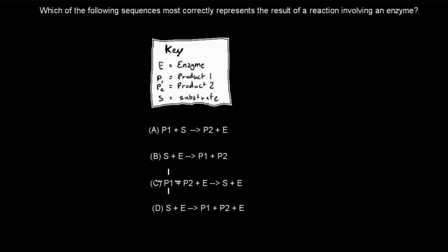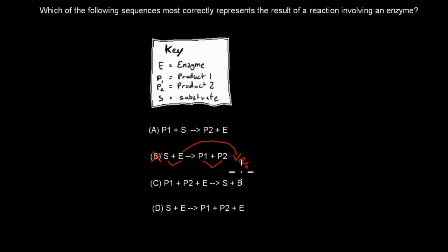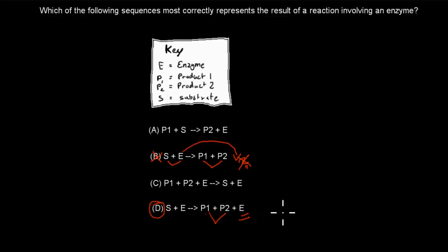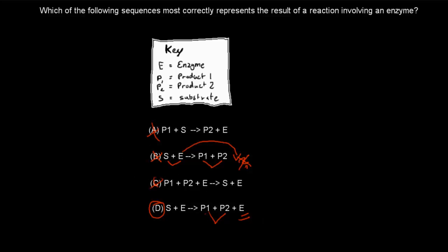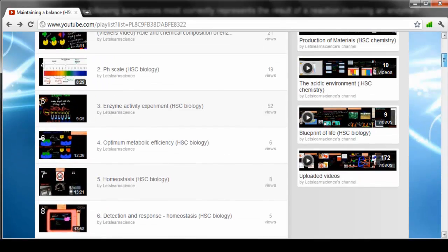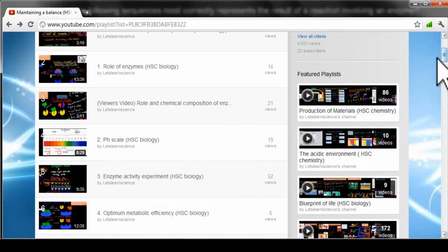The correct answer is D. One option shows substrate plus enzyme producing a product, but the enzyme is gone at the end — that's wrong because enzymes are not consumed; they can repeat the procedure. D is correct: substrate plus enzyme produces the product, and the enzyme remains unchanged — it pops back into place and can keep working. The other combinations are simply wrong. This comes from video number one: Role of Enzymes.